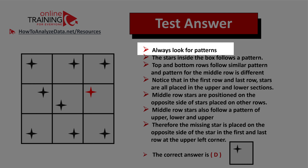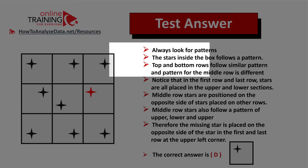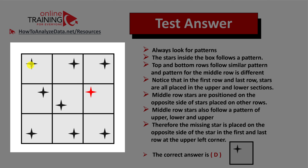Always look for patterns. The first pattern is that the top and bottom rows follow similar patterns — stars are located at the top for the top row and at the bottom for the bottom row. The middle row follows a completely different pattern: the stars go top, then bottom, then top again. Middle row stars are also placed on the opposite sides compared to the top and bottom row stars, as seen in the first column where the middle row star is in the upper right versus the left side for the other rows.